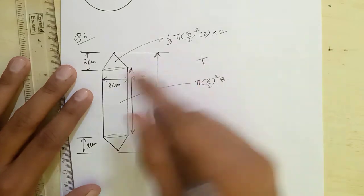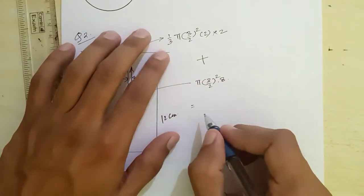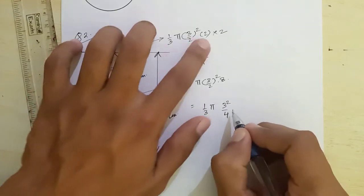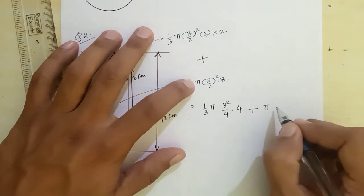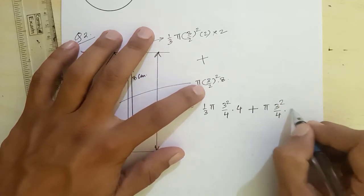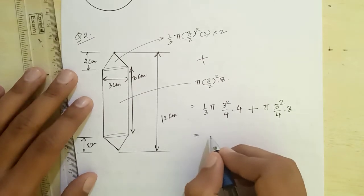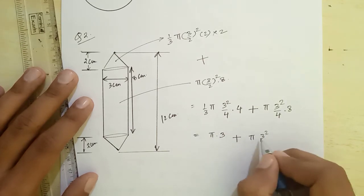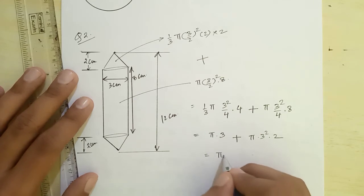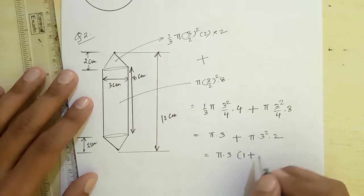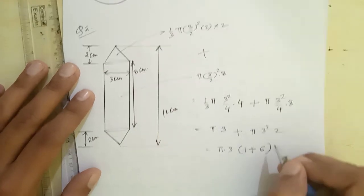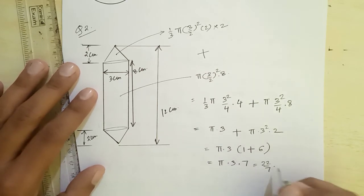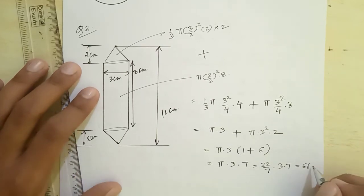Adding both volumes: 1/3 π × (3/2)² × 2 × 2 plus π × (3/2)² × 8. Simplifying: π × 3 × 1 plus π × 3 × 2, giving π × 3 × 7. With π = 22/7, this is 22/7 × 3 × 7 = 66 cm³.